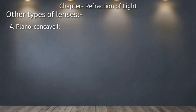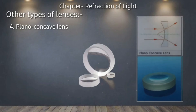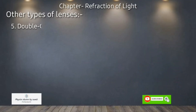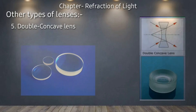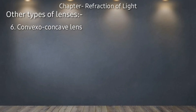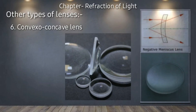The fourth type is the plano concave lens — एक ऐसा lens जिसकी एक side plane होती है और एक side concave shape में होती है, यानि बीच में से पतली होती है। The fifth type is the double concave lens — एक ऐसा lens जिसकी दोनों ही sides concave shape में होती हैं, यानि बीच में से पतली होती है। The sixth type is the convexo-concave lens — एक ऐसा lens जिसकी एक side convex और एक side concave shape में होती है।